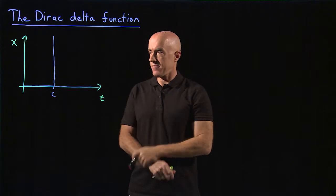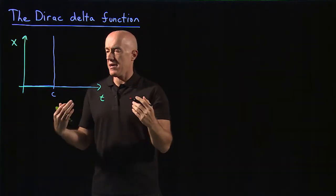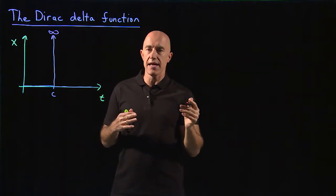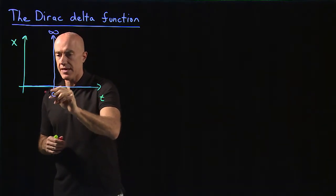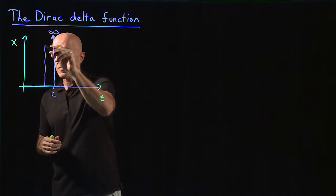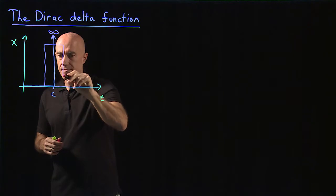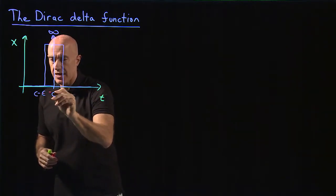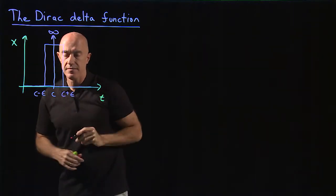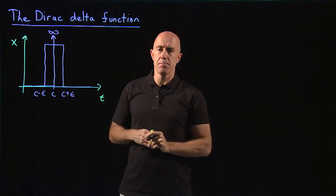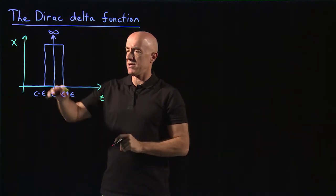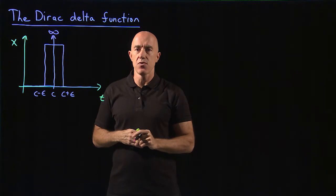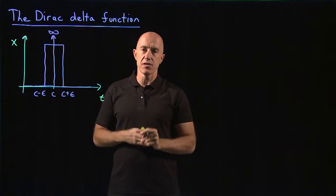It's kind of a strange function, but we can model that as a limit of a real function. We would model that by taking not quite infinite, but finite, going up at c minus epsilon and coming back down at c plus epsilon. But how tall should this function be? The idea of the Dirac delta function is that even though it's zero everywhere except at one point where it's infinite, if you try to integrate that function, you end up with one.